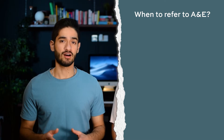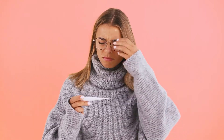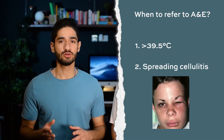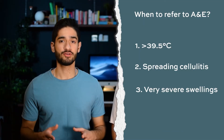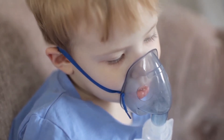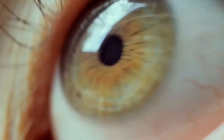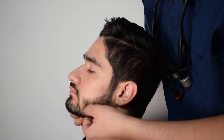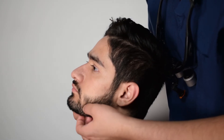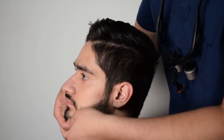The times when you should refer them to A&E are: number one, if they have a temperature higher than 39.5 degrees Celsius; number two, if there are signs of spreading cellulitis; and number three, very severe swelling. Some ways you can check this: is the patient struggling to swallow or stick their tongue out? Is the swelling compromising the airway? Is the patient struggling to close the eye? You can also try to palpate the lower border of the mandible — if you can't palpate it, they need to go to A&E.